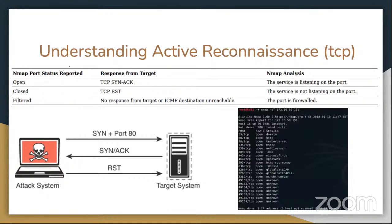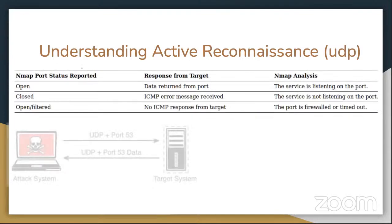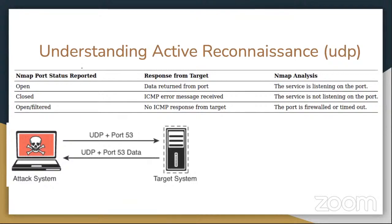The SYN scan runs by just sending a SYN packet to start the three-way handshake. TCP connect will make the full three-way handshake and then disconnect. A UDP port scan is lowercase -s uppercase U, and you'll get one of these back: either it'll be open — the service is listening — it'll be closed, or open/filtered, where we didn't get a response from the target. So it could be a firewall or it could have timed out.